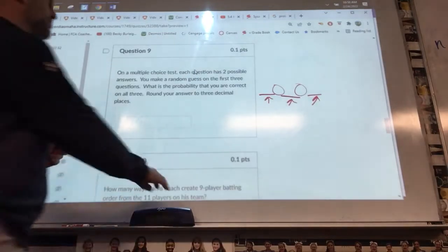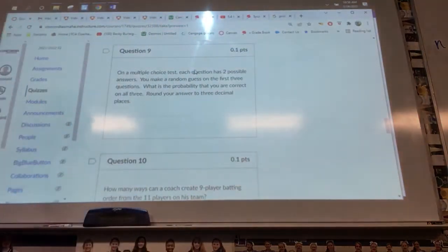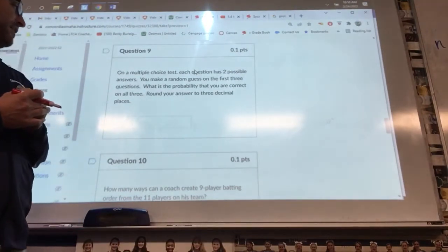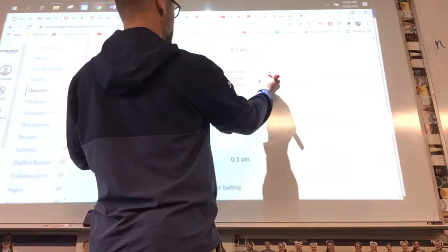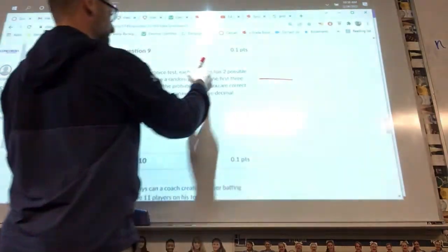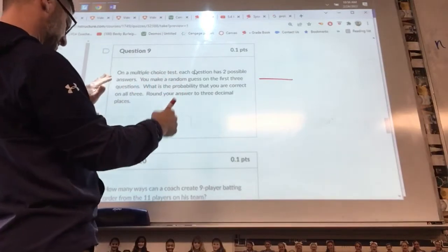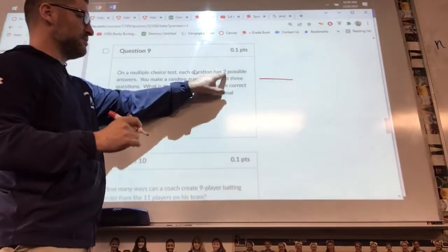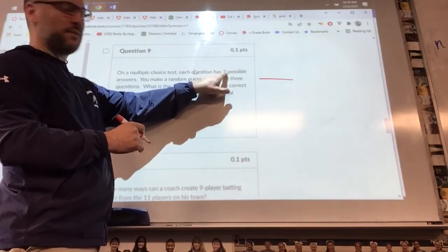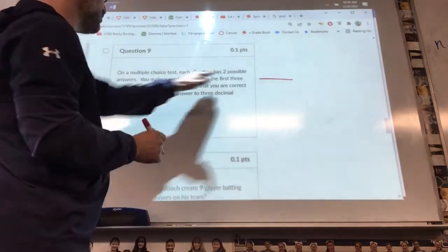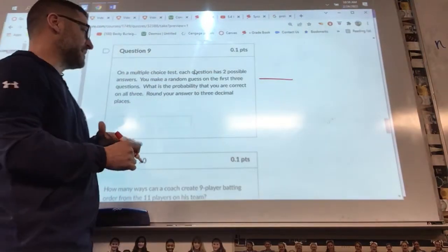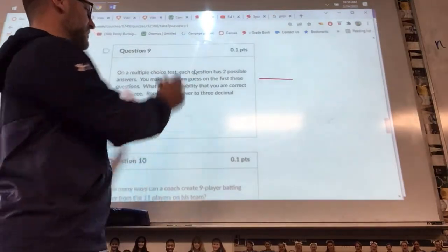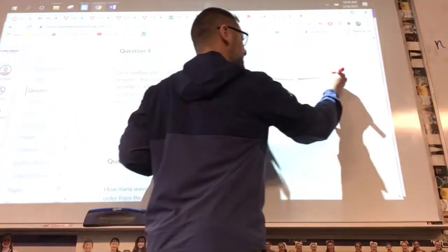Question nine: on a multiple choice test, each question has two possible answers. You make a random guess on the first three questions. What's the probability that you're correct on all three? So this one, I think it's a two multiple choice test. This could be a lot of different numbers. It could be two possible answers, it could be three possible answers. But if you have two possible answers, there's a one in two chance that you're going to get it right. If you had five possible answers, there'd be a one in five chance that you'd get it right.